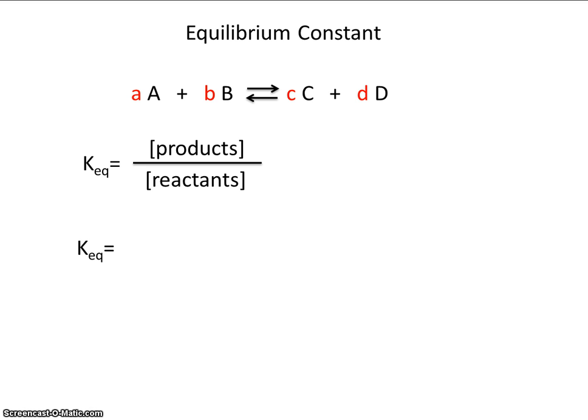More specifically, I've written it like this. So our products are C and D. Here they are, C and D. We also have coefficients, these letters in red, lowercase red c and lowercase red d.